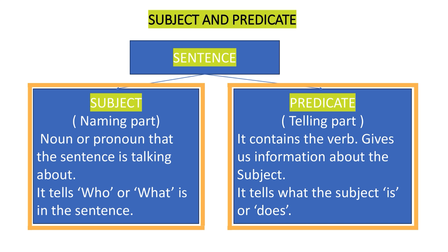A subject can either be a single noun — the name of a person, an animal, a non-living thing, or just a single pronoun. It can also be two words, more than two, or anything. And the predicate, of course, has no limit to it because it gives us information about the subject.